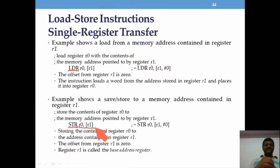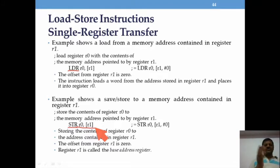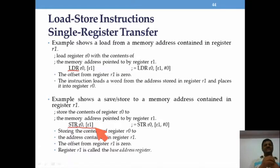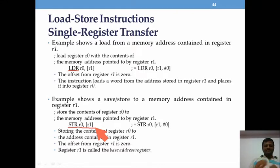The square bracket indicates that register R1 is used as a pointer which holds the address of memory. The data from that memory location is copied to register R0. In the case of store, the content of R0 is transferred to the memory address held by register R1. Registers R0 through R13 can be used.